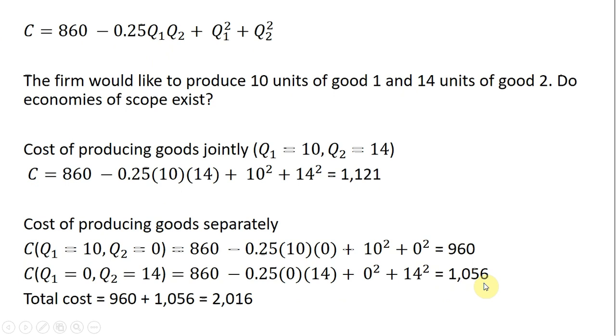So taken together, the cost of producing good 1 and good 2 in separate facilities is $2,016. So clearly, it is cheaper to produce both of these goods jointly. $1,121 is less than $2,016. So this firm does have economies of scope.